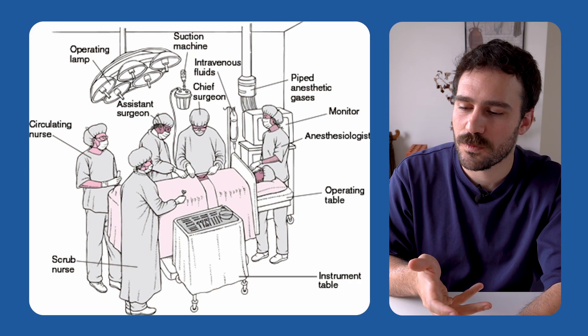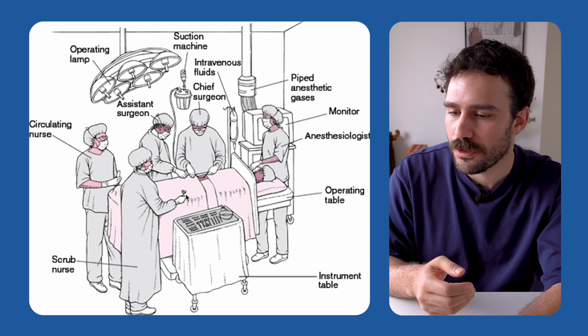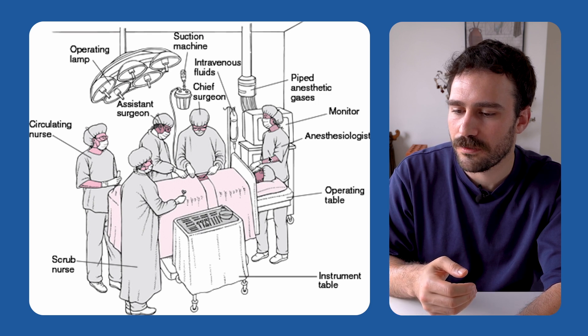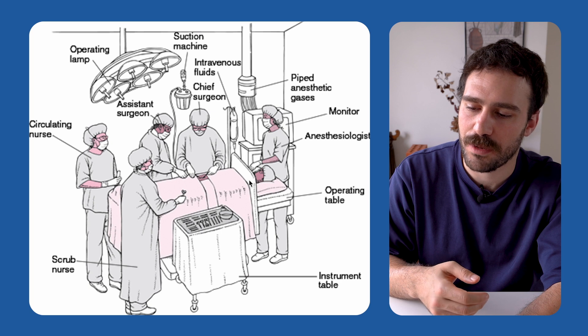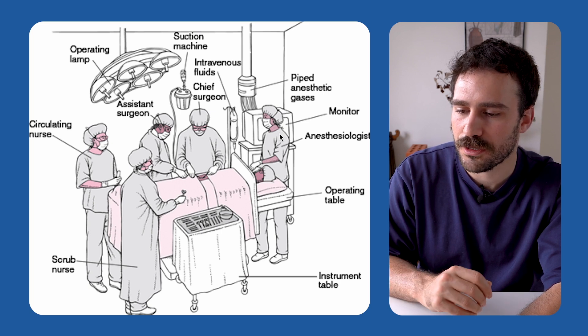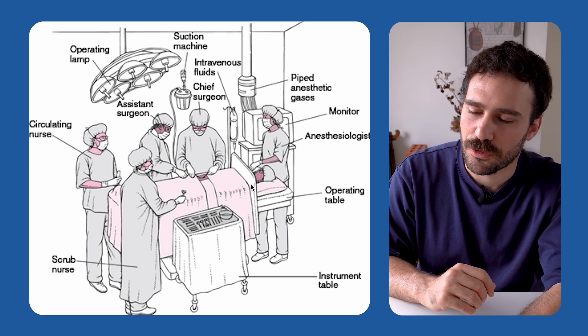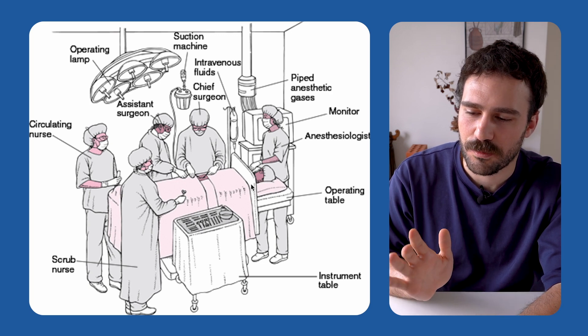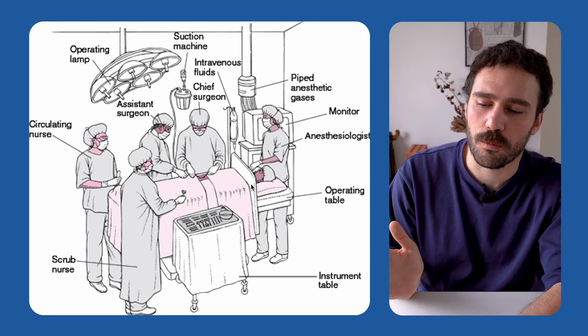I've got an image here that depicts a basic view of what an operating theater might look like. Obviously there are all different surgeries and different setups for different procedures, so it'll look slightly different depending on what operation and what theater you are witnessing. You've got the patient on the operating table, then the anesthetist at the head of the patient, usually guarded by some sort of drape or protection from the patient's airway and the operating field itself.